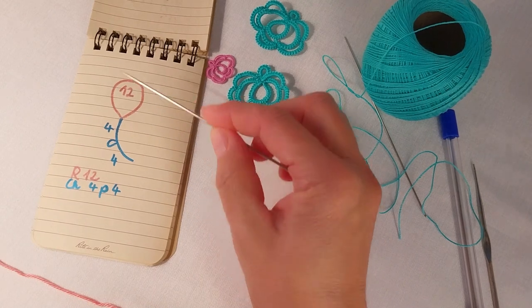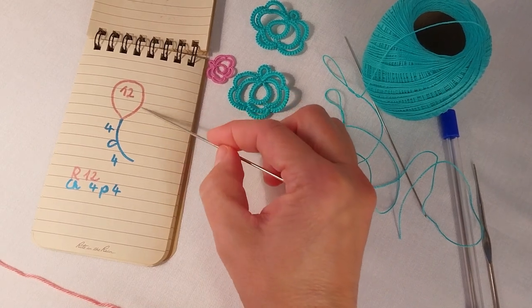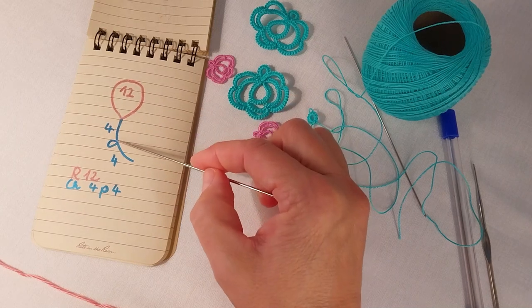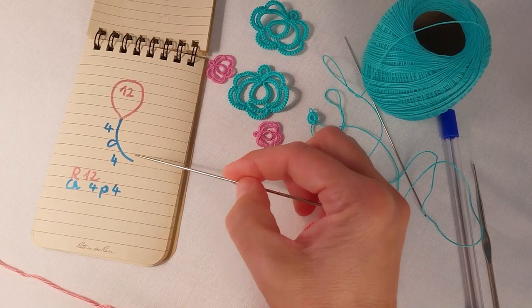In this pattern you see we have a ring of about 12 double stitches and this is the chain that we are going to learn today.